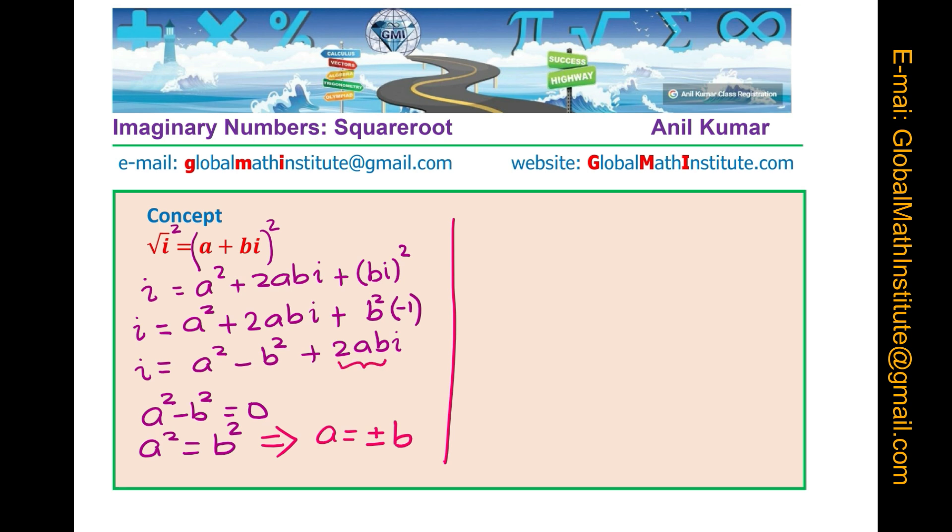The next part which we are looking into is the imaginary parts. 2abi should be equal to i. So, let us rewrite that. We have 2abi equals to 1. So, that means from here, we can say a is equal to 1 over 2b.